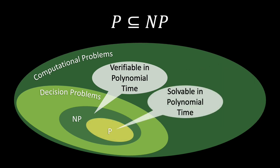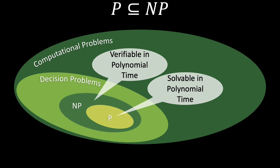The two complexity classes P and NP are related. Complexity class P contains all decision problems that are solvable in polynomial time, and NP contains all decision problems that are verifiable in polynomial time. Notice that if we can solve a problem in polynomial time, then we can determine whether the answer to the decision problem is true or false in polynomial time, even without a certificate. Therefore, the complexity class P is a subset of NP.